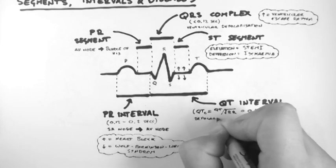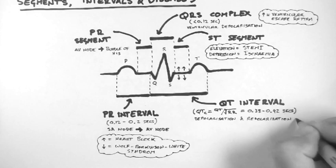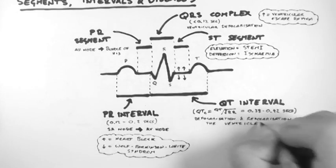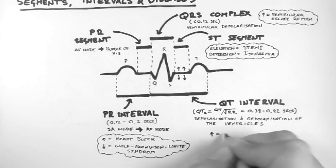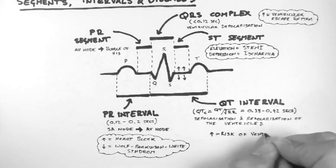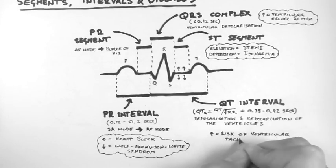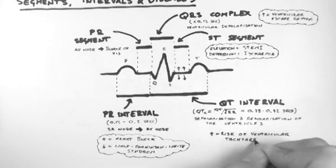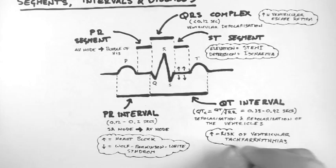The QT interval corresponds to the depolarization and repolarization of the ventricles. An increase in the QTC predisposes the patient to an increased risk of life-threatening ventricular tachyarrhythmias, such as ventricular tachycardia, ventricular fibrillation and torsade de pointe.